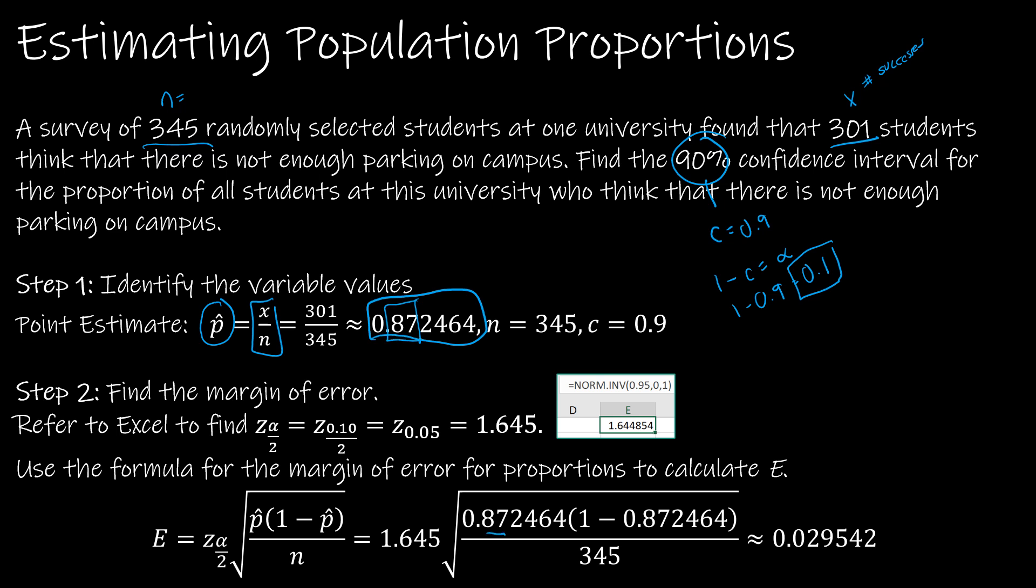I have not really rounded. A lot of people make the mistake of calling this 0.87 and then using 0.87 here, and then 1 minus 0.87 which would be 0.13, and then this value is much much different because you've rounded way too much. So do not round that value. Do yourself a favor.